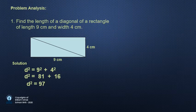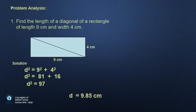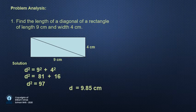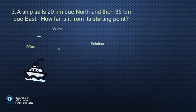Then d equals, let us calculate it. Yes, d power 2 equals 97, and d equals square root of 97. D equals 9.85 cm.